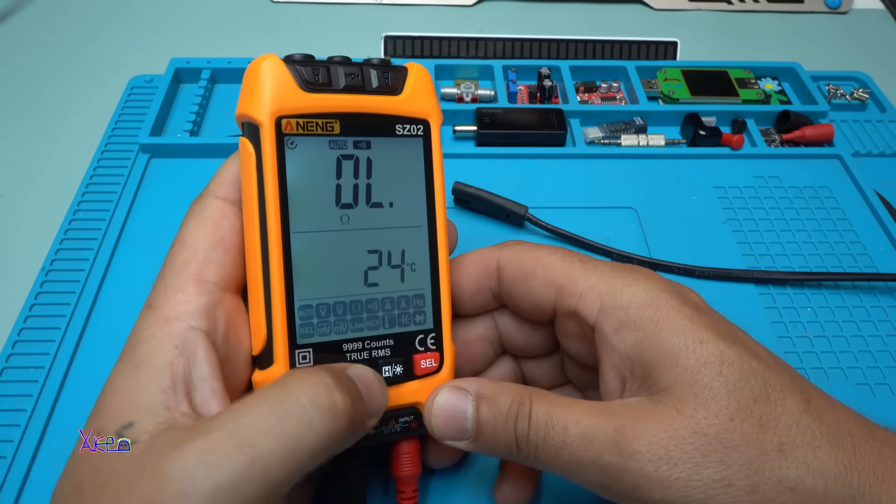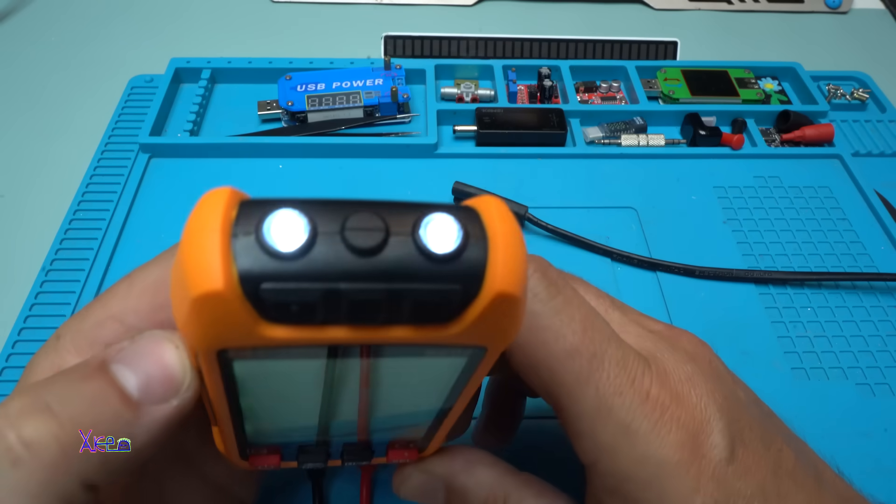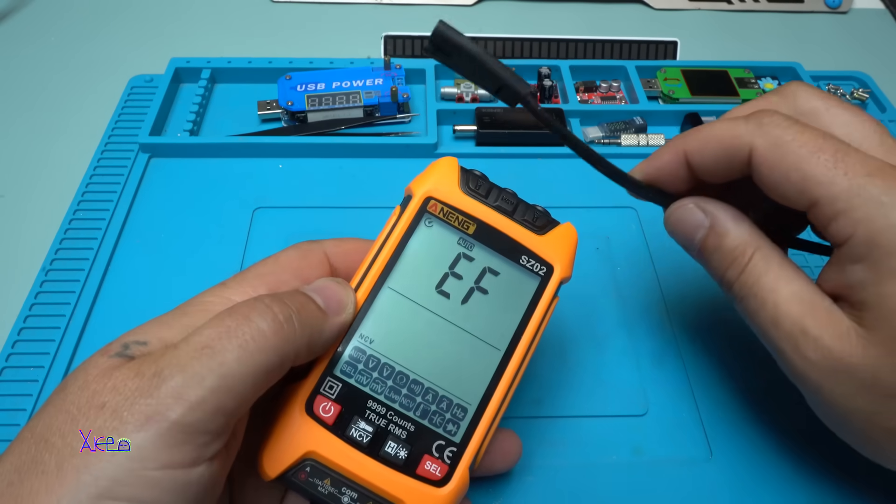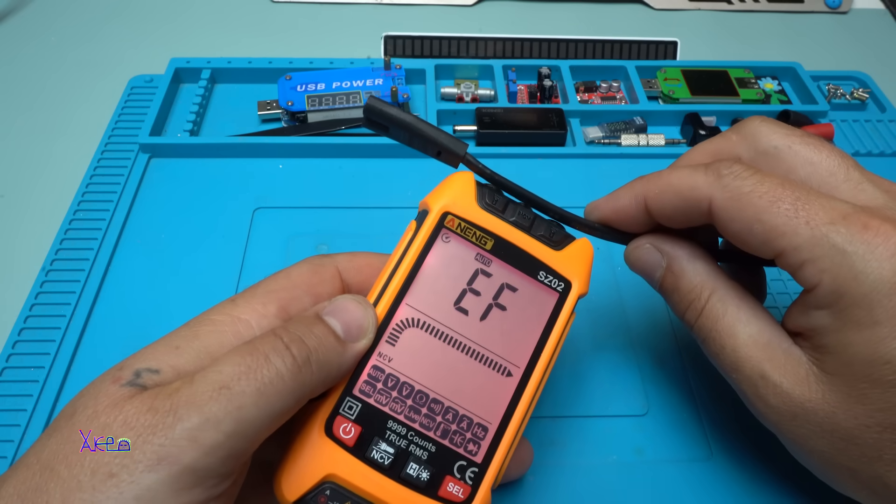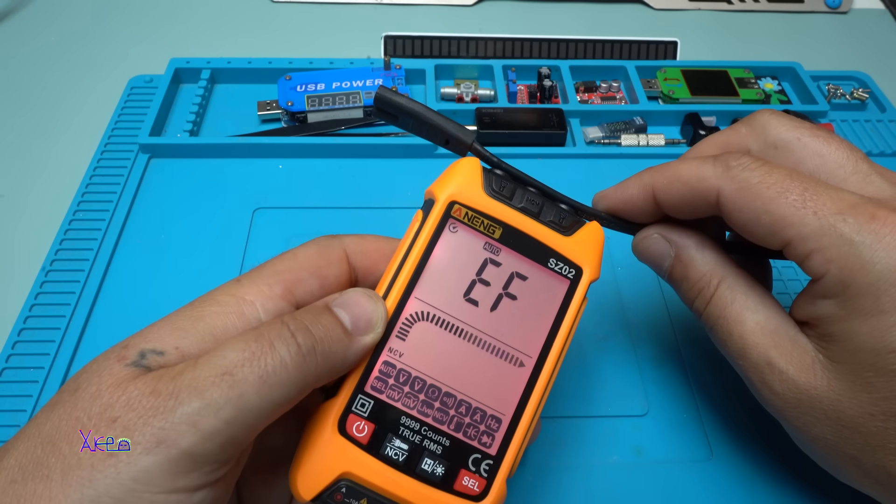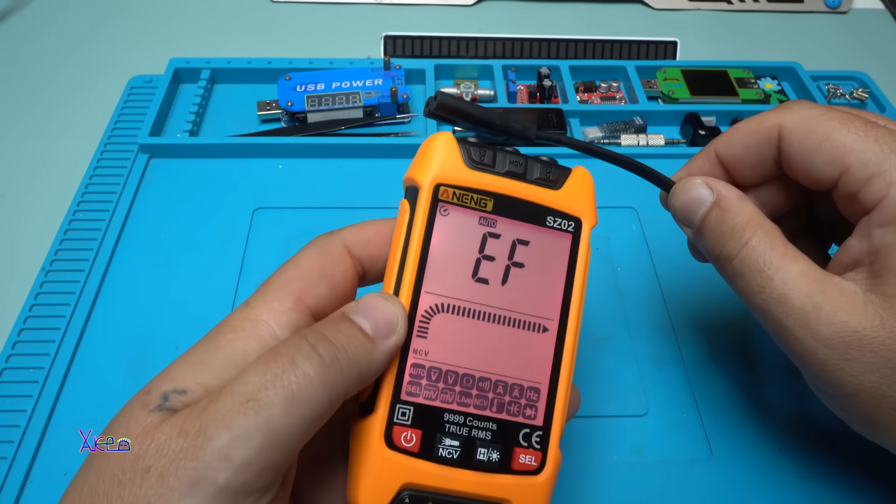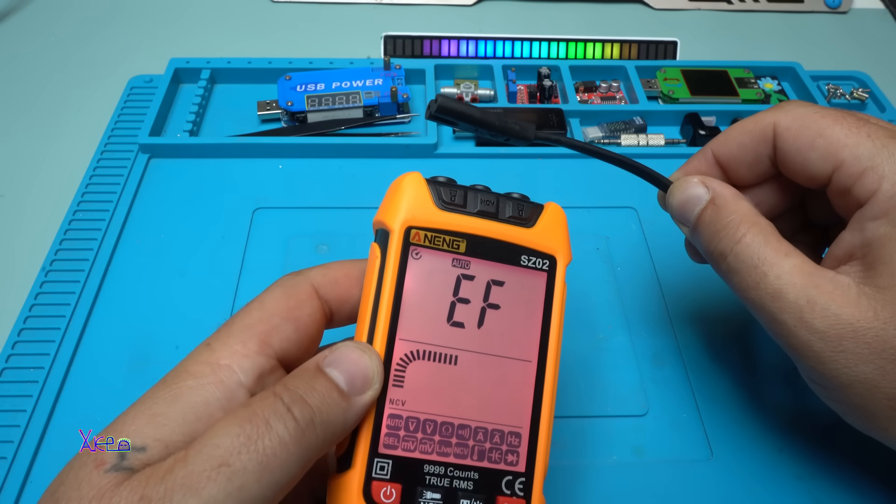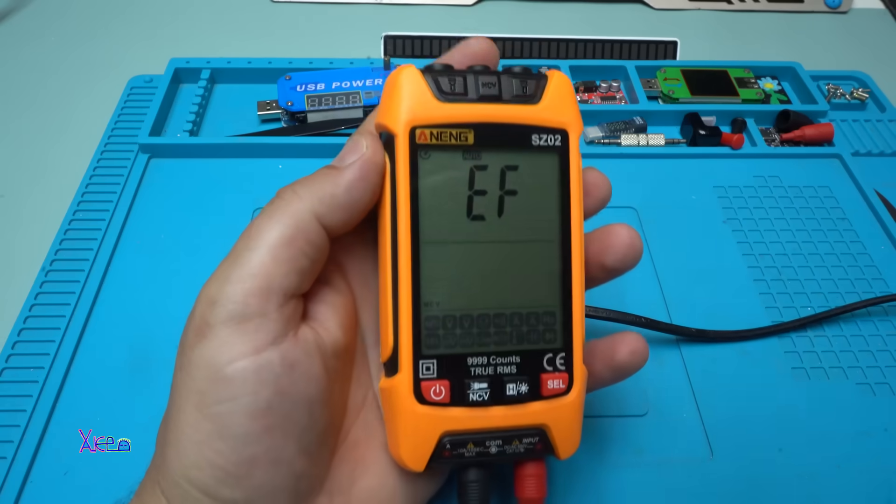Selecting non-contact voltage. This is the flashlight. One pressing is activating the lights. But when you hold, electromagnetic field. Works fine. From around 3 centimeters, it's detecting electromagnetic field. Beautiful. Beautiful unit.